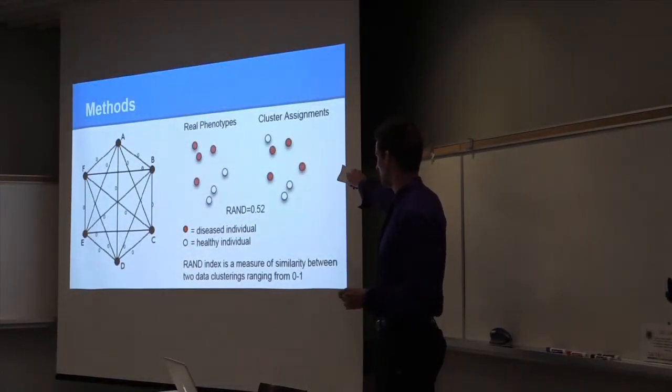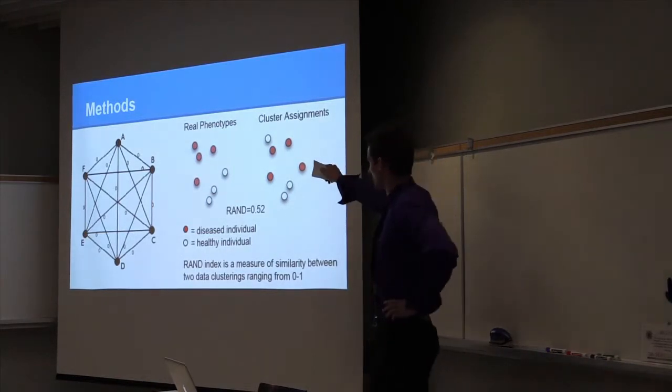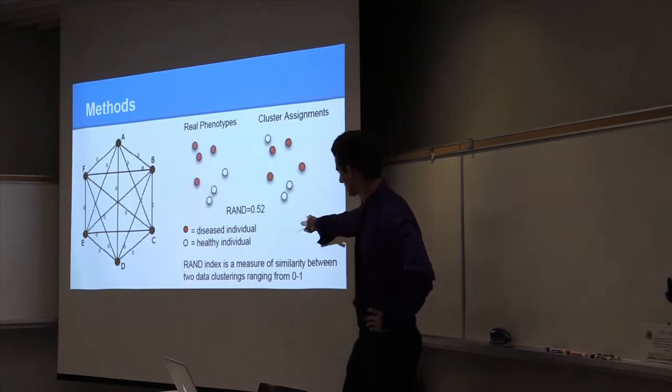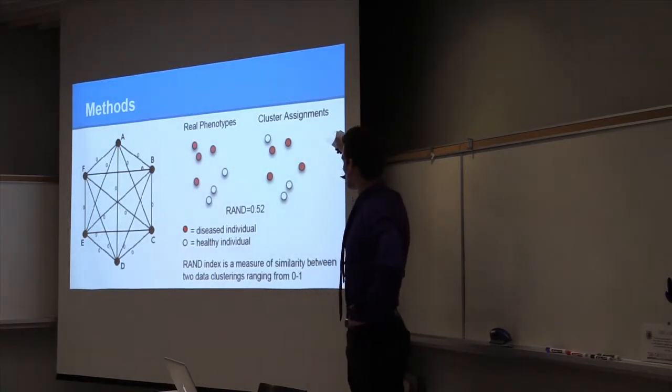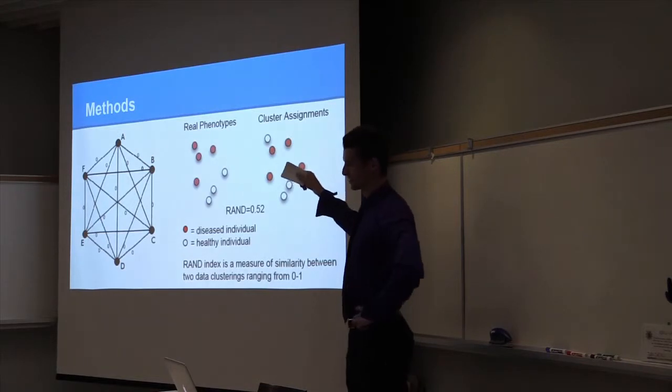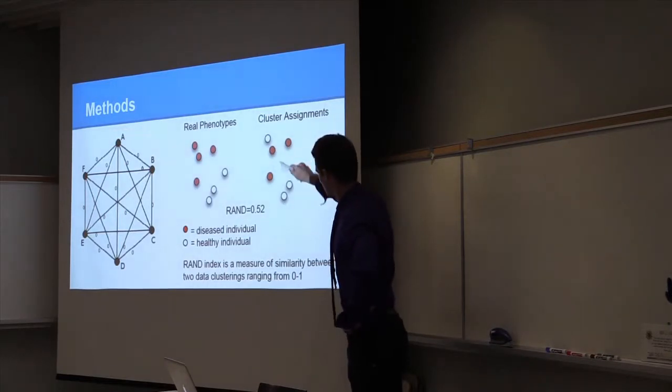And the actual phenotypes, this kind of picture shows what you would be doing there. So the left would be the real phenotypes. You can see the legend with the diseased individual, and then pretend that features A and B, using those features and nothing else, we cluster all individuals into two clusters and we find them like this.